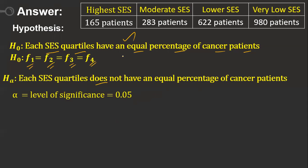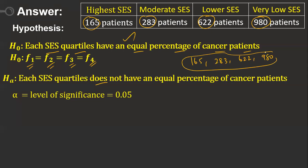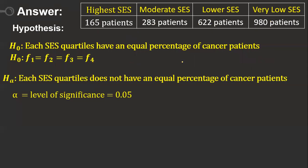The values 165, 283, 622, and 980 are the observed values (O), representing what was actually recorded in the study.